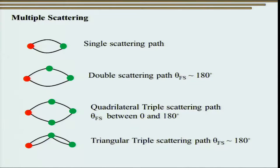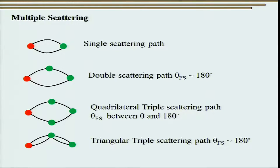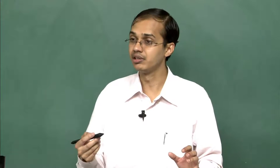What kind of interaction can take place? The earlier figure shows a simplified assumption where each atom reflects waves in a nice spherical form. However, this may not always be true — there are various kinds of interactions. Some possible multiple scattering events are illustrated: first, a single scattering path where the electron wave scatters from the red atom to the green atom and is reflected back. There is also a double scattering path, mostly for forward scattering angles close to 180 degrees, as well as quadrilateral triple and triangular triple scattering paths. Depending on the kind of interaction, the mode of oscillation pattern will vary.